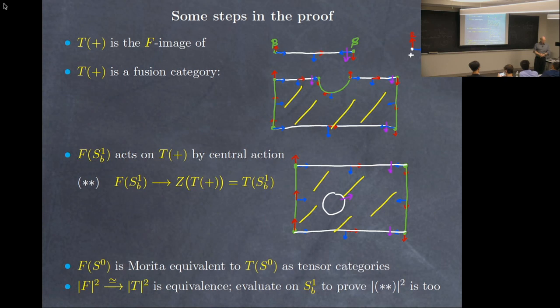Is your work beyond Kapustin-Saulina's boundary conditions? Kapustin-Saulina may have some boundary conditions. Our theorem is proving an obstruction to having them — it's not trying to produce examples. The Turaev-Viro theories always have examples.